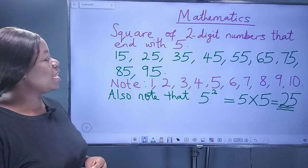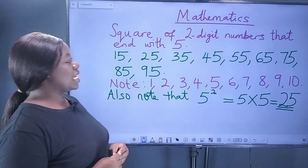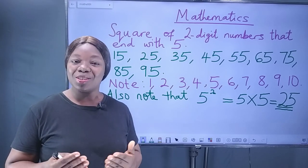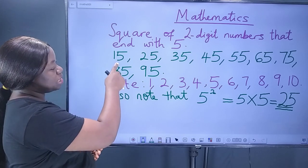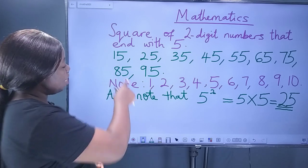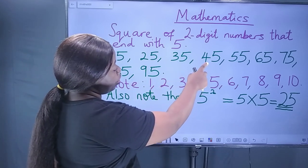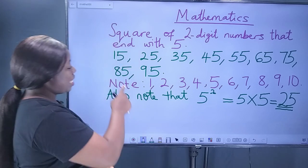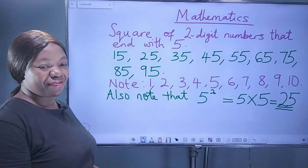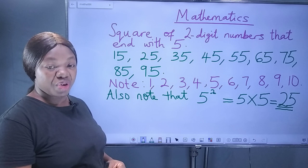So, let's roll in. Square of 2-digit numbers that end with 5. What are 2-digit numbers that end with 5? These are the examples of 2-digit numbers that end with 5. They are 15, 25, 35, 45, 55, 65, 75, 85, 95. They are 2-digits that end with 5.